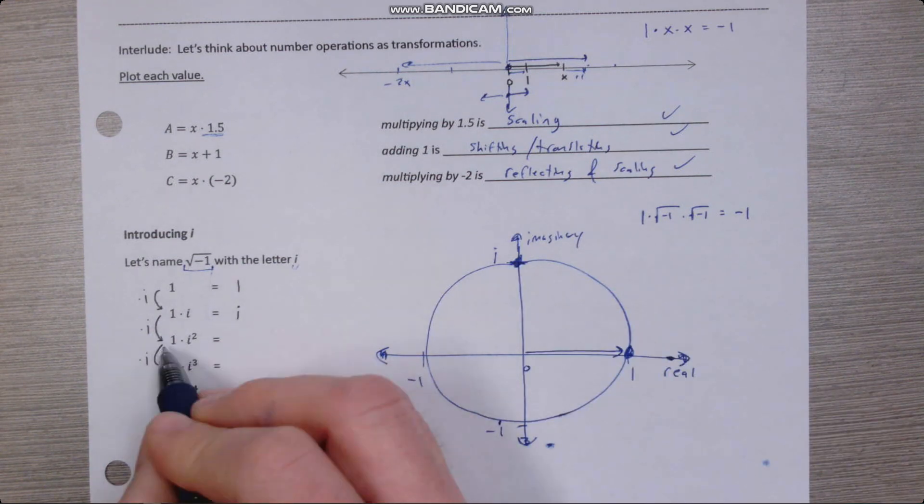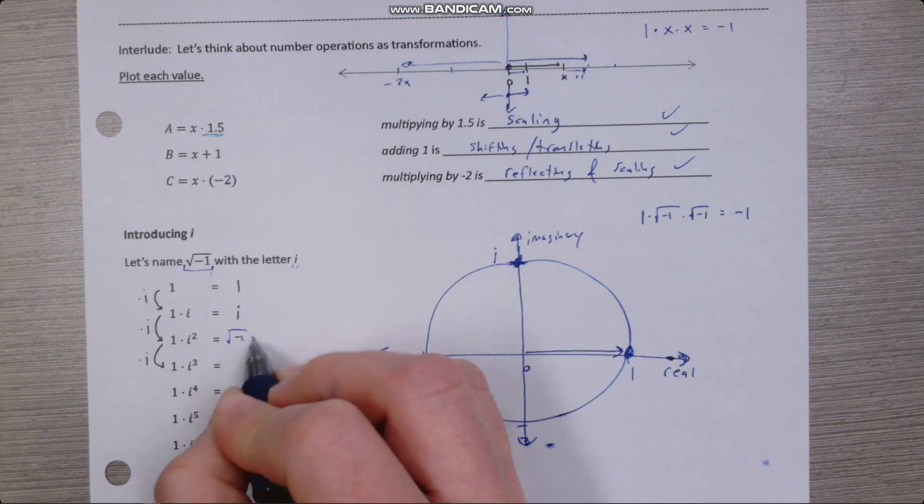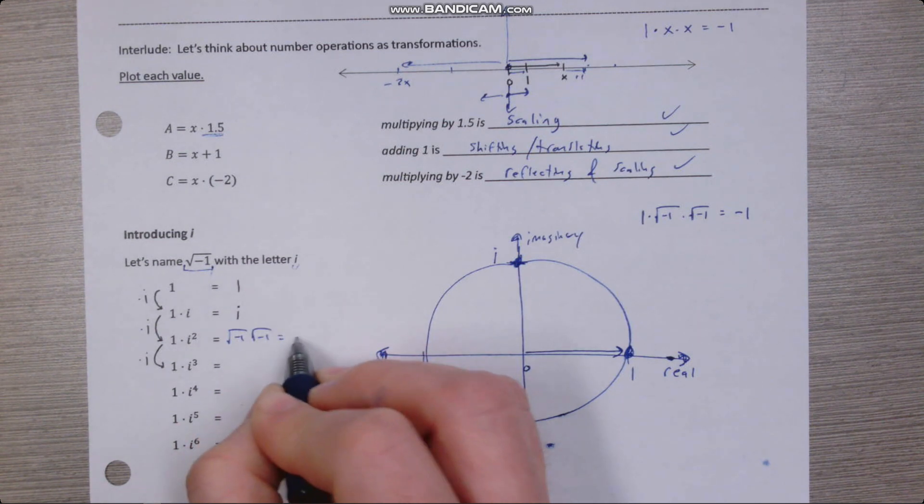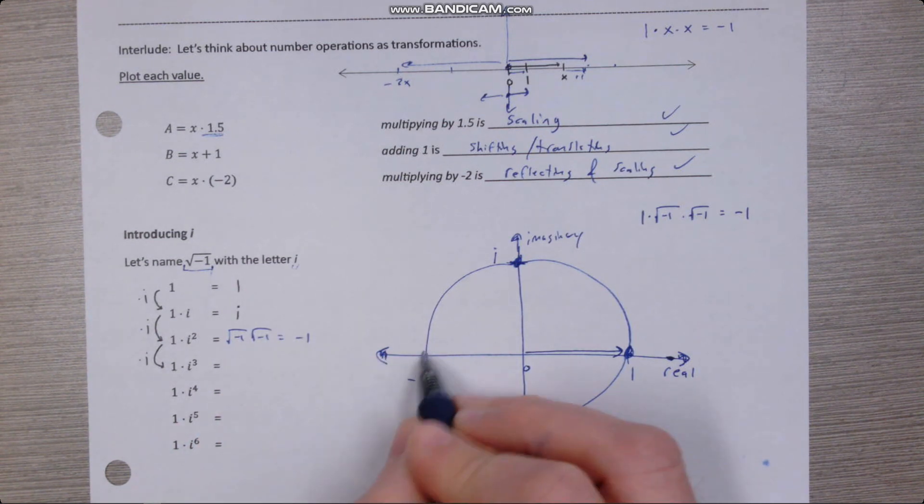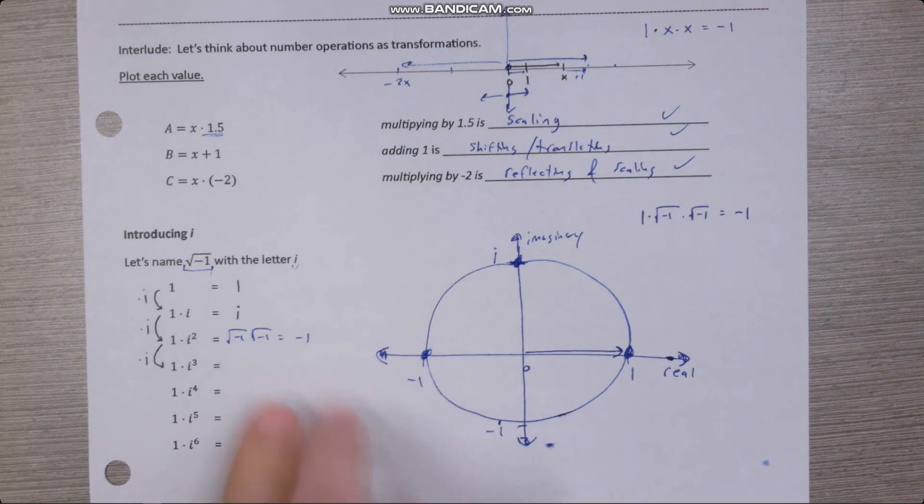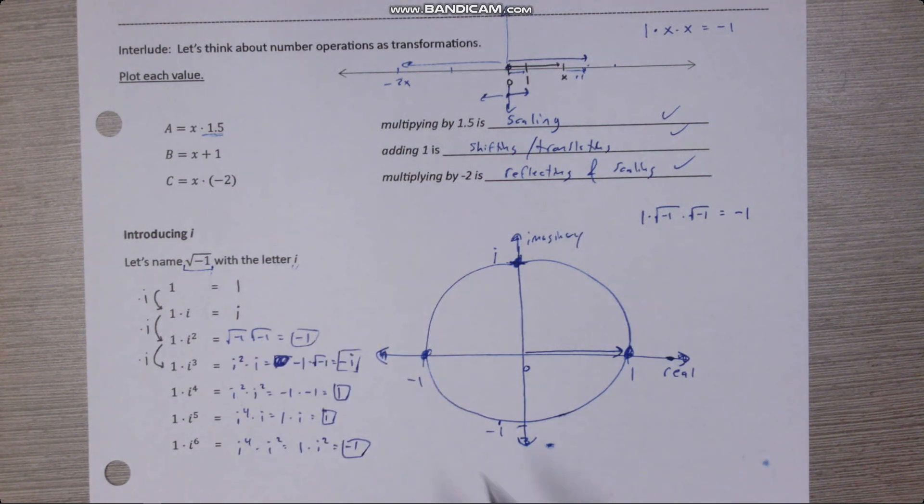If I multiply by i again, I get i squared, which is root negative one times root negative one is just negative one, so that would be here. Go ahead and fill out, pause the video, fill out the rest of the table, and then see how it makes sense geometrically.